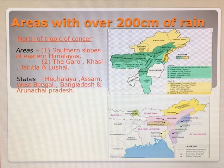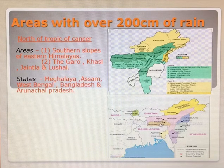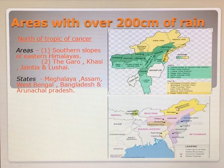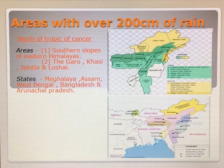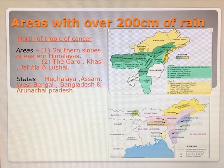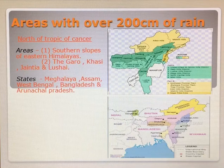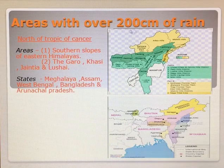States where it rains heavily include Meghalaya, Assam, Arunachal Pradesh, West Bengal, and even Bangladesh. These areas receive rainfall over 200 cm.